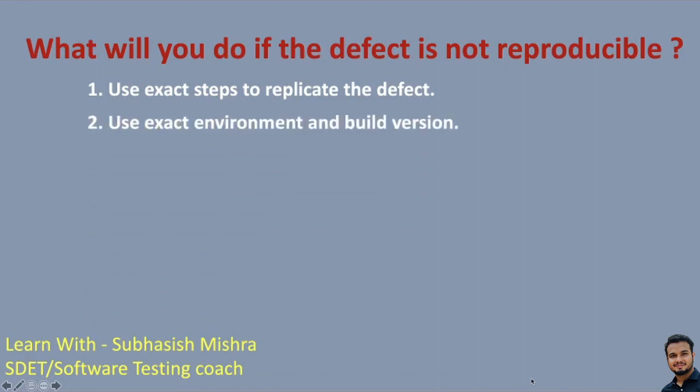The next thing is to use the exact environment and build version. Environment plays a vital role. Think about what has changed in the environment since you raised the defect. You should always reproduce the issue in the same environment and same build. In every organization, there will be multiple testing environments like QA, SQA and so on. Make sure you are testing in the same environment which you used while reporting the issue. Also make sure the build version is the same. You can also check that there are no changes to your existing database — the database should also be the same.